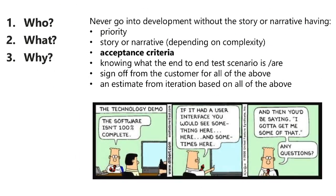Success or failure of your project depends largely upon a few key points. You have to understand three questions: who, what, and why. Never get into development without the story or narrative having priority. The story should have defined complexity — if it is not defined, never proceed. Acceptance criteria is one of the key components. Know what the end-to-end testing scenarios are, get sign-off from the customer, and then get an estimate from iteration based on all of the above.